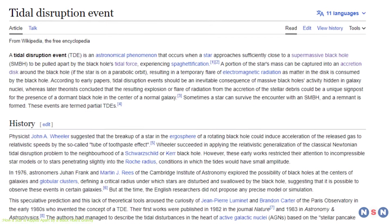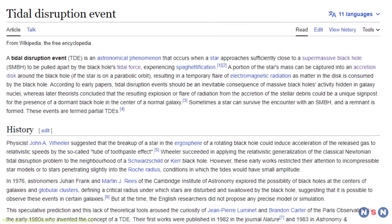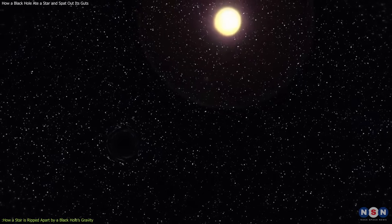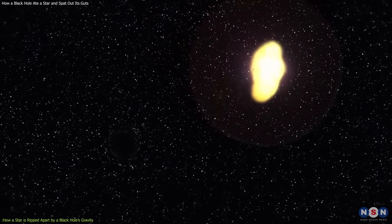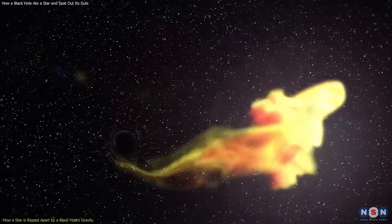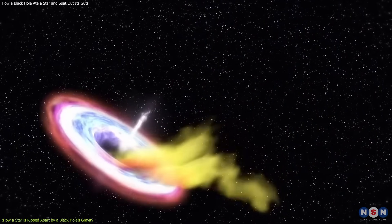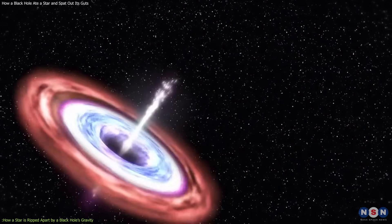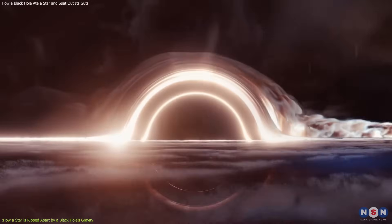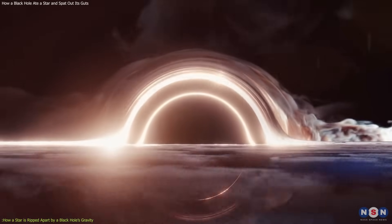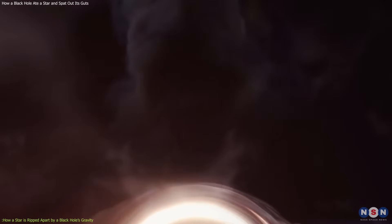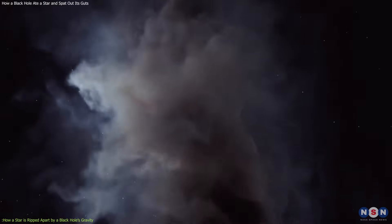This whole process is called a tidal disruption event, or TDE for short. It is a rare and spectacular phenomenon that can only be observed when a star passes very close to a black hole, which happens once in every 10,000 to 100,000 years per galaxy. It is also very hard to observe because it lasts for only a few months or years, and because it can be obscured by dust or other objects in the way.